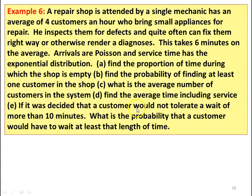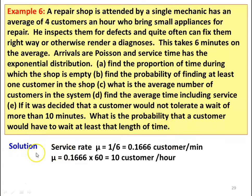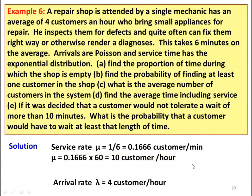Subdivision E: if customers would not tolerate a wait of more than 10 minutes, what is the probability that a customer would have to wait at least that length of time? For the solution, service rate mu equals 1 divided by 6 equals 0.1666 customers per minute, which equals 10 customers per hour. Arrival rate lambda equals 4 customers per hour, as given.